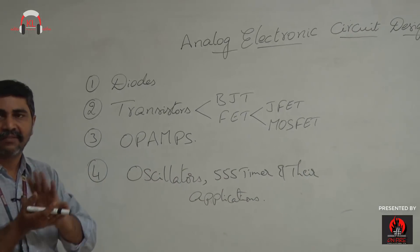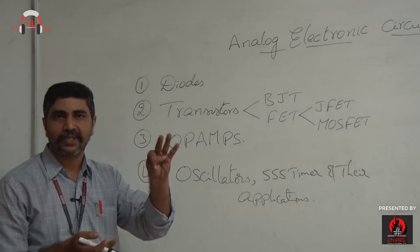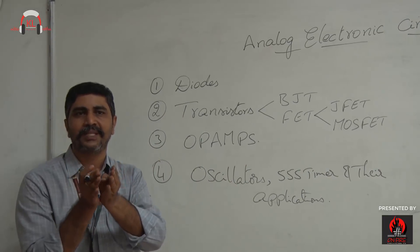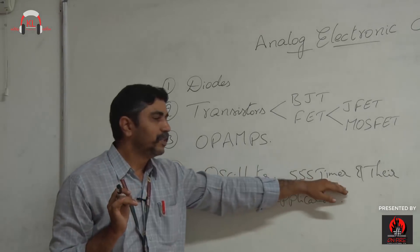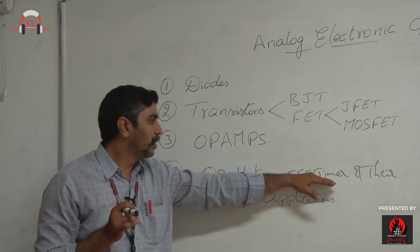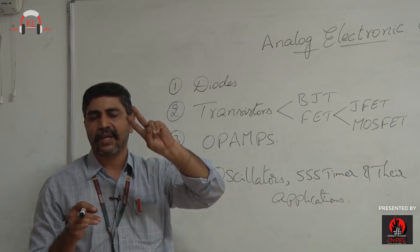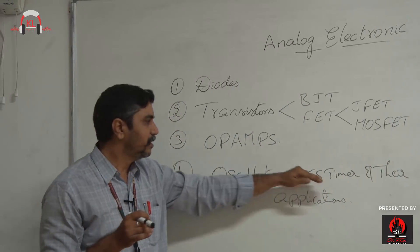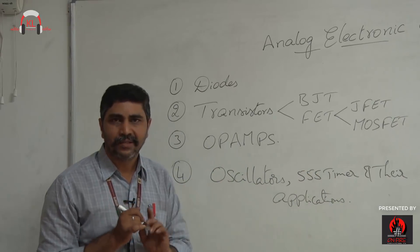In oscillators you have four different types: RC phase shift oscillator, Wien bridge oscillator, Hartley, and Colpitts oscillator. For the 555 timer, you study its basic applications — astable and monostable multivibrator. These are the things we are going to study in CO4. This is the brief outline of the entire syllabus.